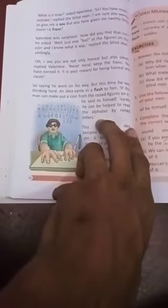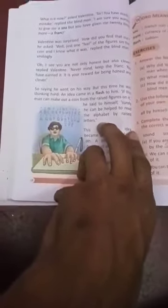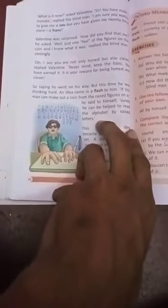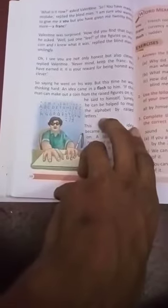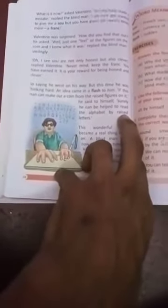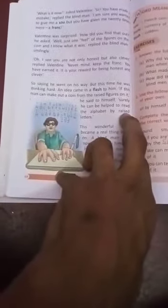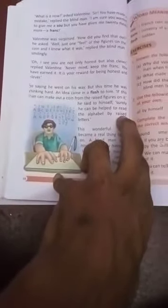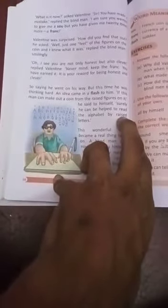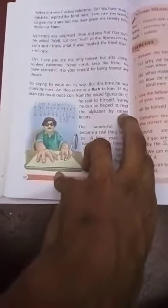Valentine went on his way but this time he was thinking. Then an idea came suddenly to him in his mind. He thought that if this man can make the coin by understanding the coin from the raised figure on it...